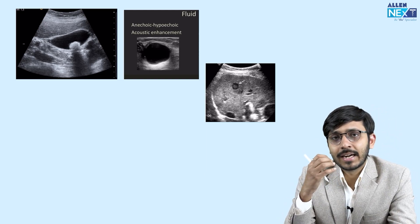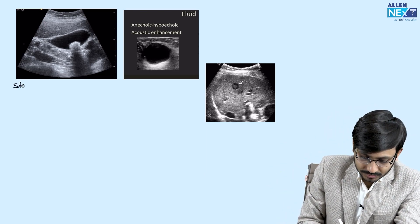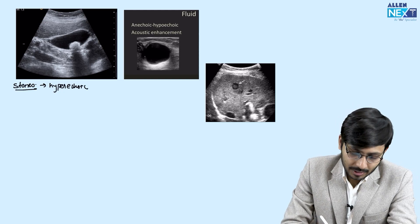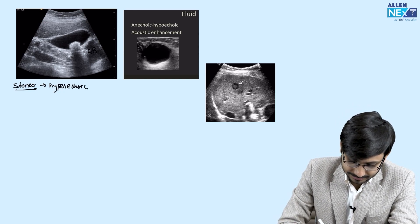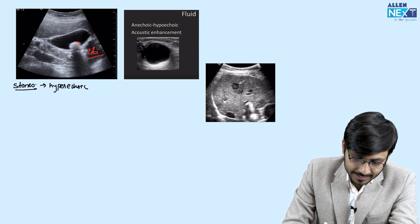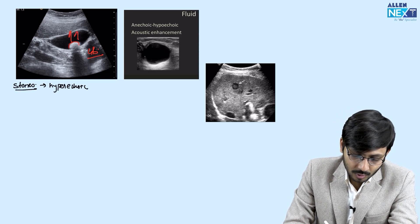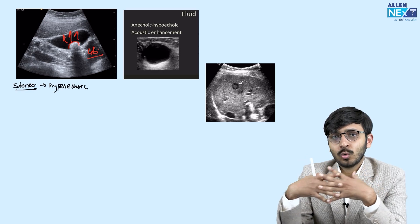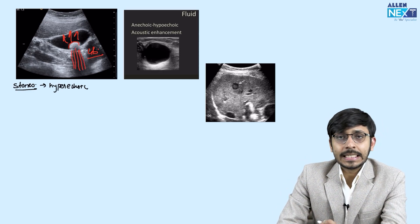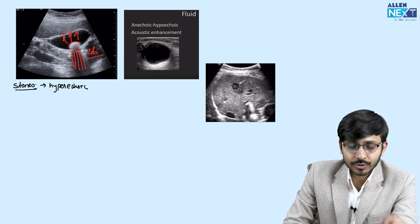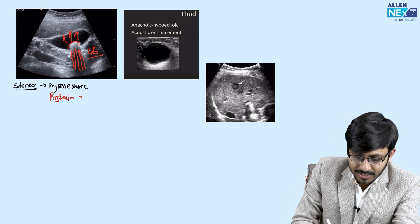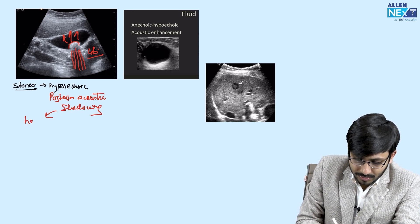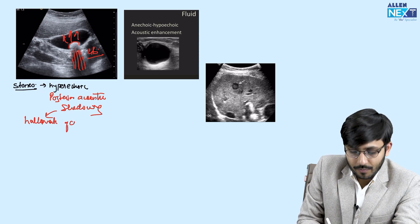If sound waves are reflected completely, for example like stones, they appear very hyperechoic. This is a GB calculus — we see it appearing very bright on ultrasound, reflecting all the sound waves. Hence it is hyperechoic. Since no sound waves are transmitted through the stone, there appears a posterior acoustic shadowing. This is the hallmark of calculi.